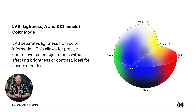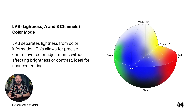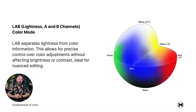Next we have LAB, where L is lightness and then there are A and B channels. LAB separates lightness from color information, which allows for precise control over color adjustments without affecting brightness or contrast — ideal for nuanced editing.